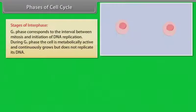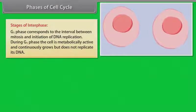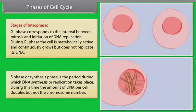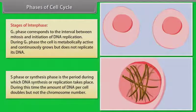G1 phase corresponds to the interval between mitosis and initiation of DNA replication. During G1 phase, the cell is metabolically active and continuously grows but does not replicate its DNA. S phase or synthesis phase marks the period during which DNA synthesis or replication takes place. During this time, the amount of DNA per cell doubles but not the chromosome number.